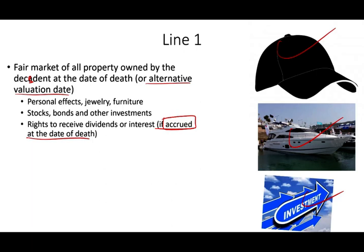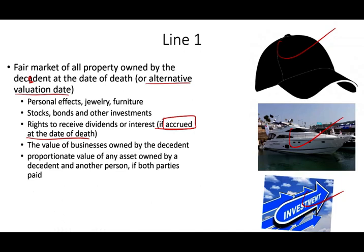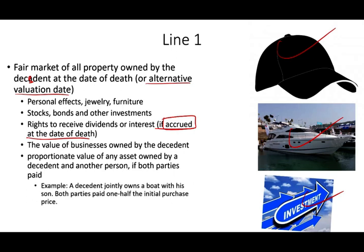The value of a business owned by the decedent is also included — you could be a partner, an LLC member, or LLP member, or have your own business. Also included is the proportionate value of any asset co-owned by the decedent and another person, if both parties paid. So if the decedent jointly owned a boat with his son and both parties paid one half, then one half of the value of that boat goes into the estate.